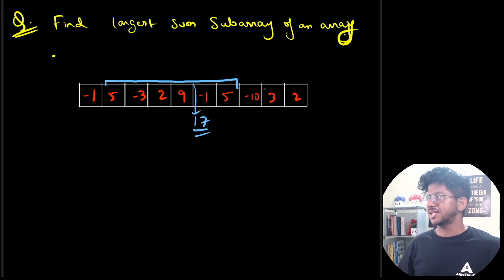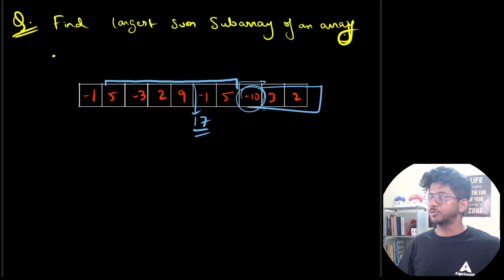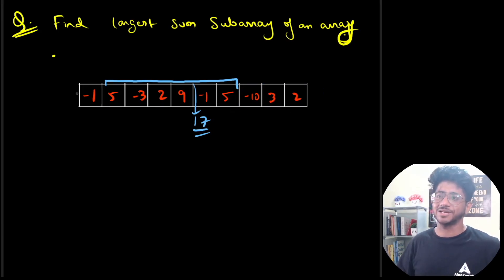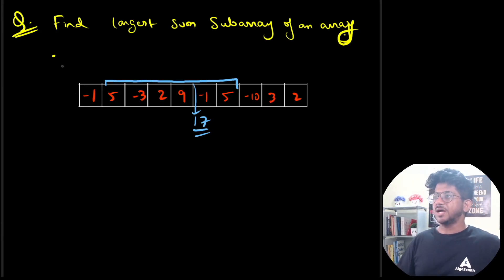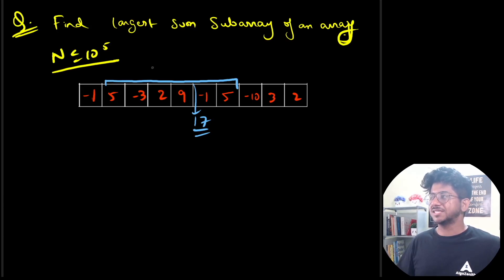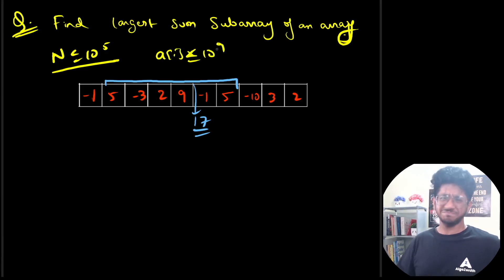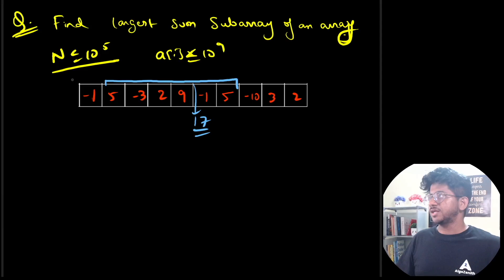You cannot really do better than 17 in this particular case. If you go beyond this on one side, it's going to include minus ten and you can't get more than that positively. On the other side is a negative number — why take that? So you have to find the largest subarray sum. We are given N up to 10^5 and elements A[i] up to 10^9.